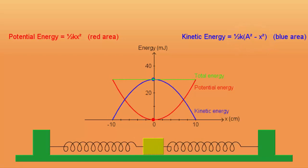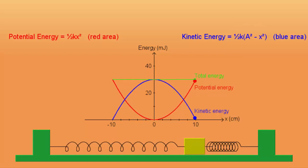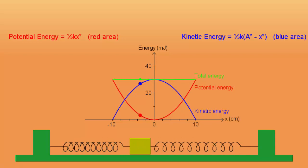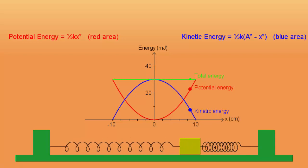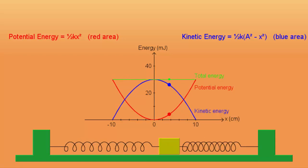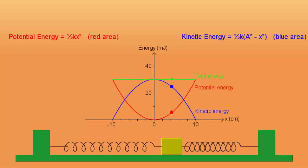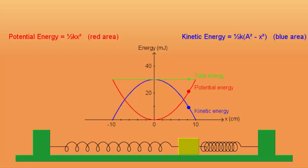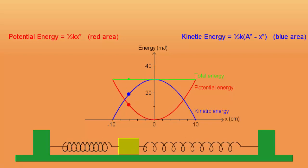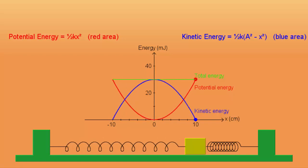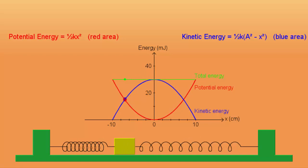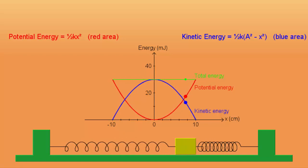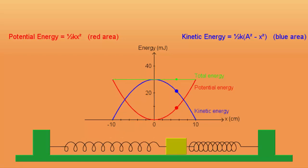For this spring-mass system, the total energy is 30 mJ — that is 30 × 10⁻³ joules — when it has a maximum displacement of 10 cm. Using the elastic potential energy formula, determine the spring constant for these springs.